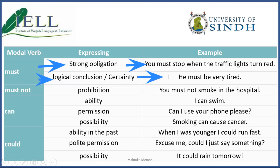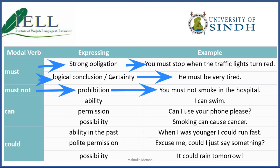We also use 'must' for certainty, like 'he must be very tired' — a logical conclusion: since he has worked all day, he must be very tired. Similarly, we use 'must not' for prohibition: 'You must not smoke in the hospital' — because you are prohibited from smoking there. So 'must not' is used for something that is not allowed.